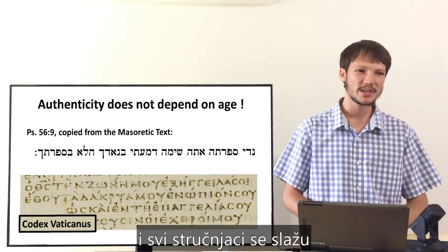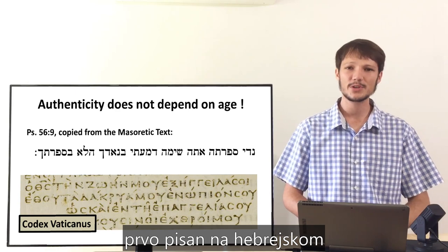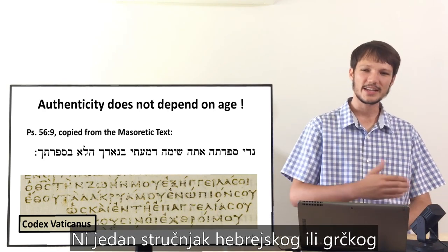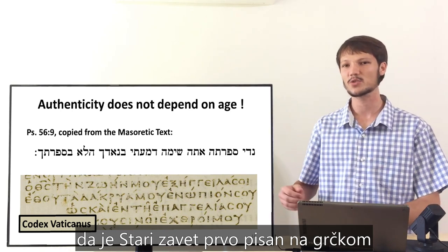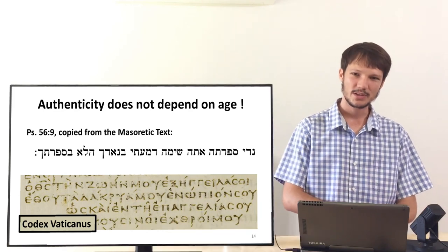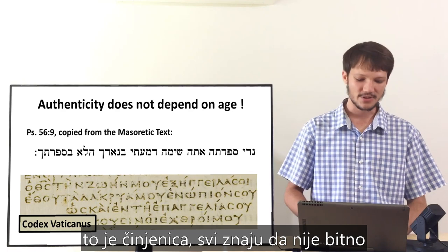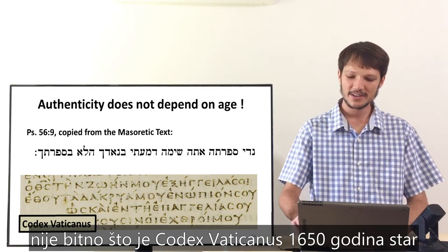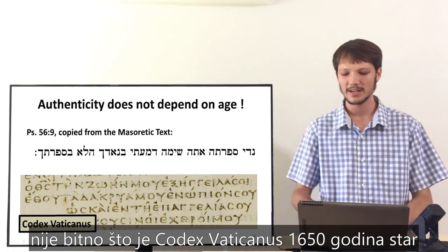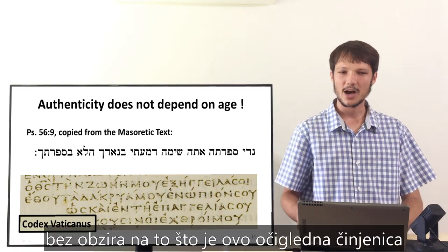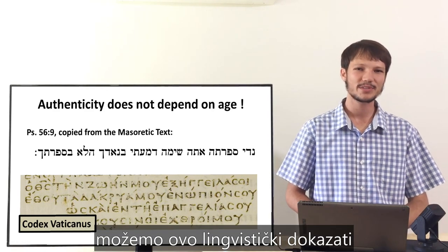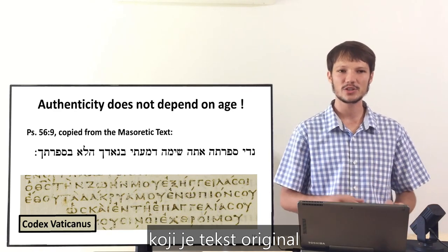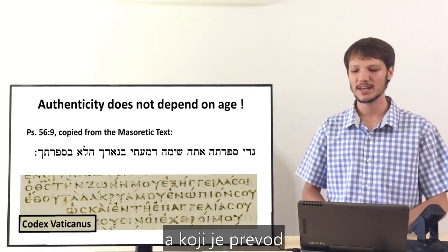However, everyone knows and all scholars agree that the Old Testament was first written in Hebrew and then translated from Hebrew into Greek. No scholar of Hebrew and Greek will tell you the Old Testament was first written in Greek and then translated into Hebrew. It doesn't matter that this Hebrew transcript is brand new and the Codex Vaticanus is 1,650 years old — that Greek manuscript is still just the translation. We can also prove this linguistically. One of the ways to prove which text is original and which is a translation is wordplay.